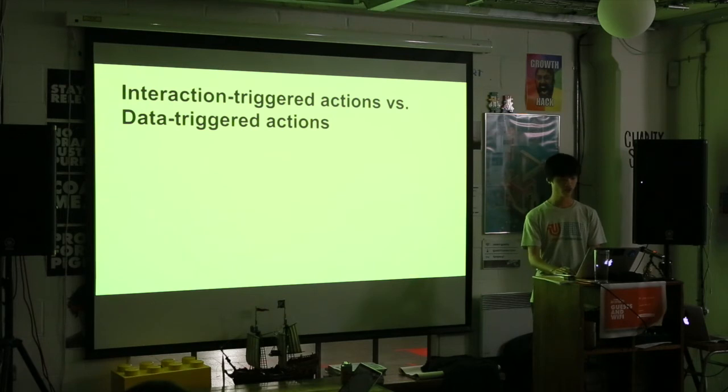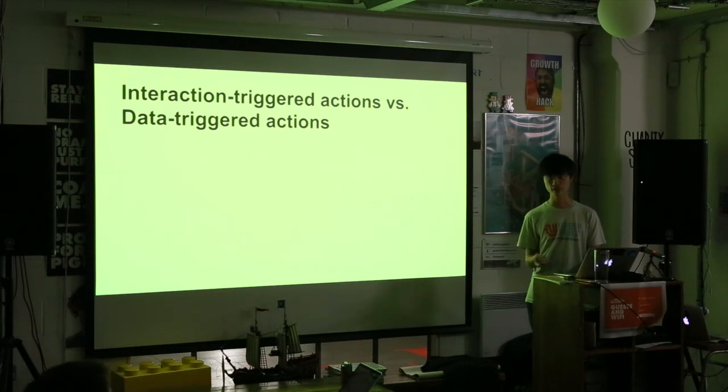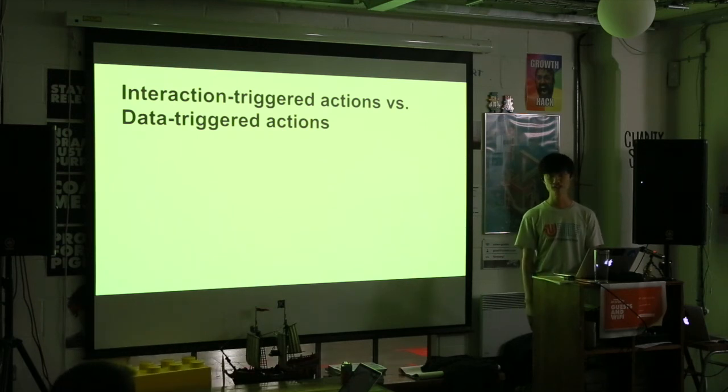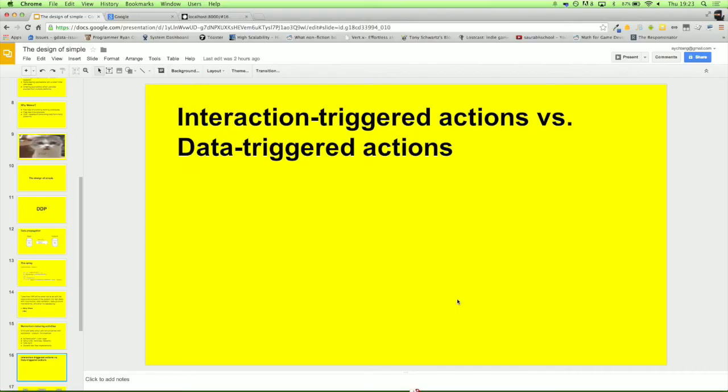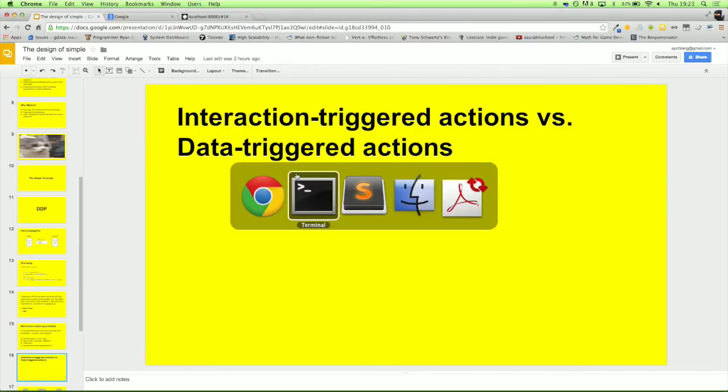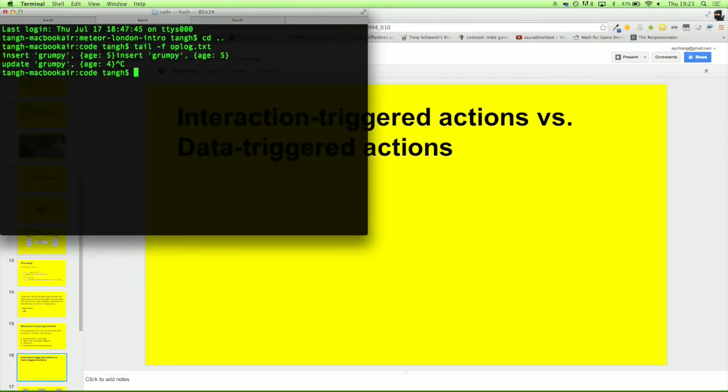Then there's interaction-triggered actions versus data-triggered actions. I think there's like two or three main ways you trigger stuff you have to do in your web applications. There's UI-based, when a user has to change data themselves, that would be interaction-triggered. And then there's stuff like rendering data, which has to be done whenever the data changes. There needs to be a simple way of doing all that. The way Meteor allows you to do that is using reactive values.